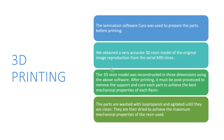Before printing, additional software is used, and then a very accurate 3D resin model is obtained. After printing, the resin must undergo post-processing to remove supports and cure each part to achieve the best mechanical properties.